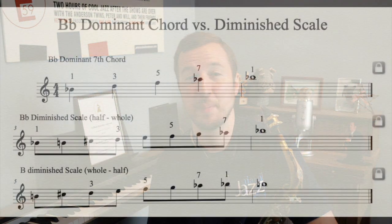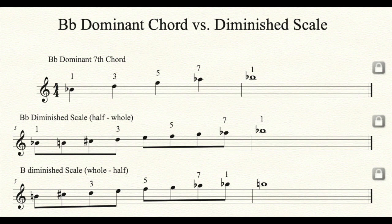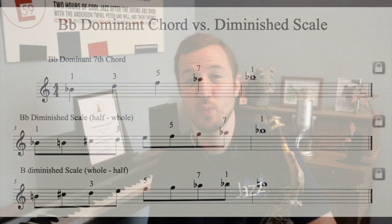One of the reasons why the diminished scale is so useful is because it fits perfectly over the dominant seventh chord. If you want to improvise over a concert B-flat dominant seventh chord, you want to use the B-flat diminished scale starting with the half step. As you can see, the diminished scale hits all the important notes of the dominant seventh chord, including the third, fifth, and seventh. The half step/whole step structure makes it great for playing lines in four-four time and lends itself well to a tongue-slur jazz articulation.